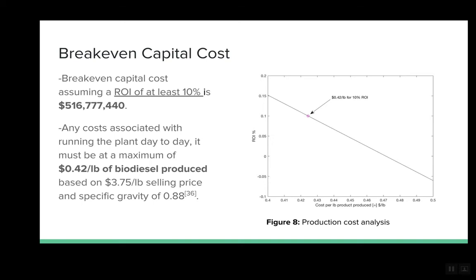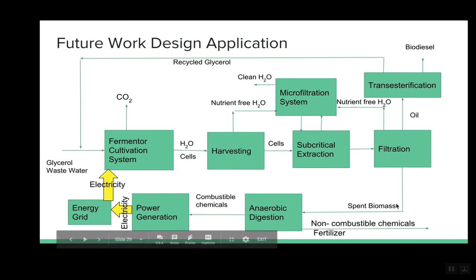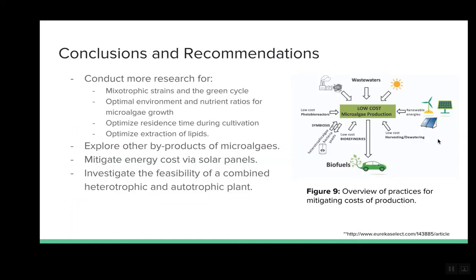This further work is recommended prior to investment. Although we found this process to be feasible, there is still room for improvement. Our future work design takes on a larger scope: spent biomass is used via anaerobic digestion to generate power to mitigate energy costs, and a water filtration system was added to enhance extraction efficiency and decrease projected maintenance costs. For conclusions and recommendations, we recommend further research in the green cycle and mixotrophic strains, optimal microalgae growth conditions and residence time in cultivation, exploitation of other byproducts, augmentation of solar panels to mitigate energy costs, and investigation of a combined heterotrophic and autotrophic plant design. For our proposed design, we recommend a more thorough economic and emission analysis. Thank you.